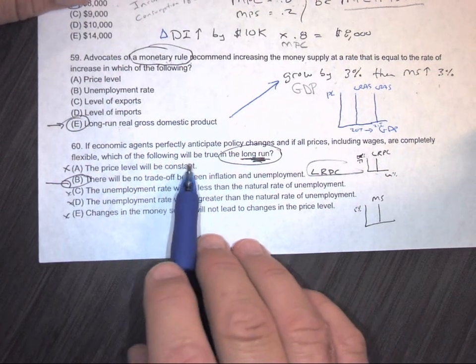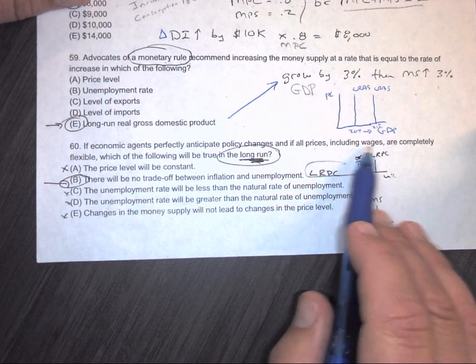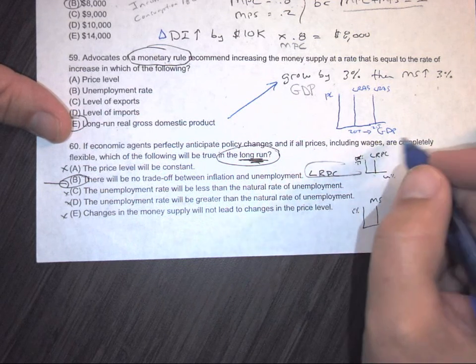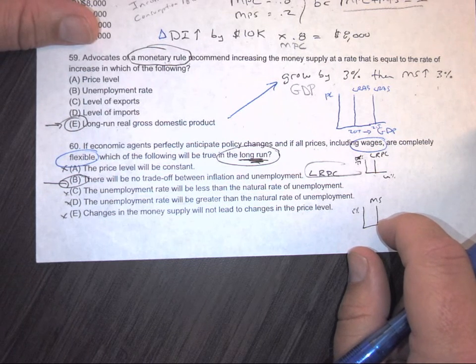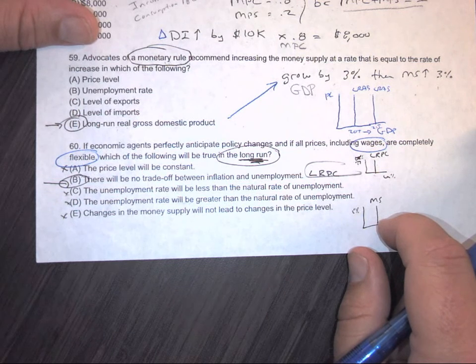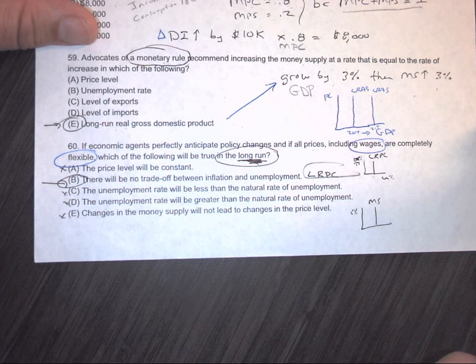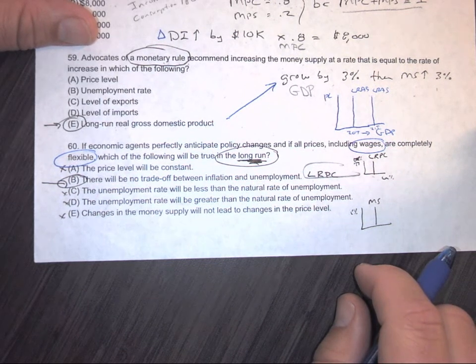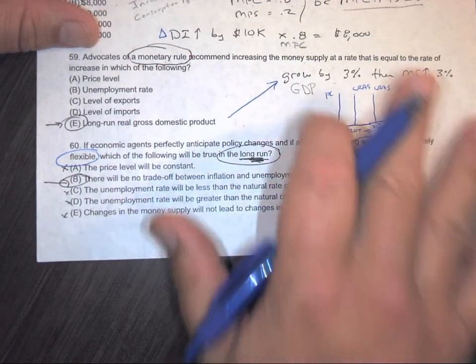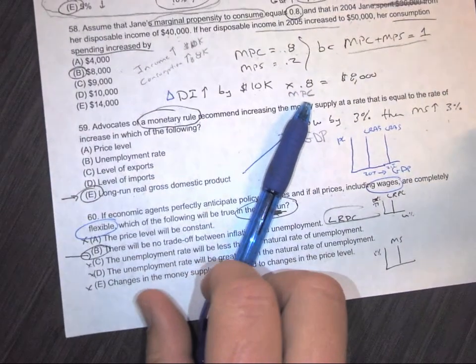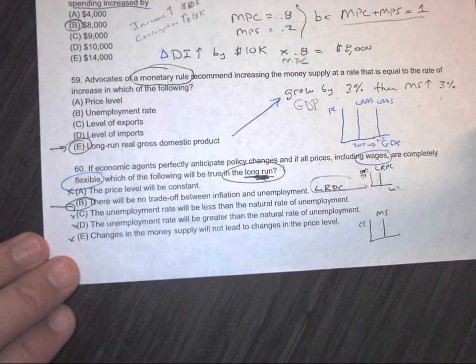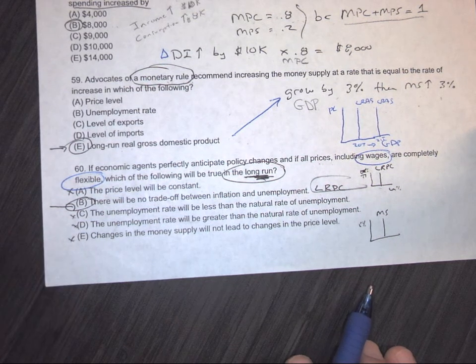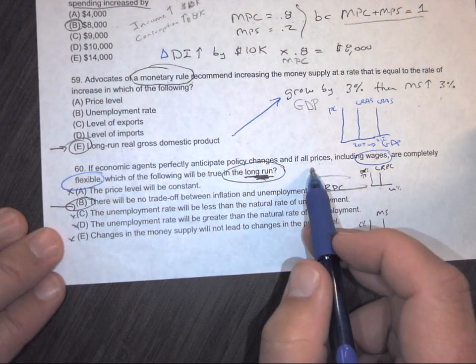Number 60. If economic agents perfectly anticipate policy changes, and if all prices, including wages, are completely flexible, which of the following would be true in the long run? Okay. This part right here. Wages being flexible. If it's a recession and you lost your job and you were making $12 an hour, you do need to be flexible on your wage if you want a job. Well, think about this. In a recession, employers have the upper hand, don't they? Because guess what? Don't people need a job? And if they walk in and give you a resume and they're like, hey, I am really good at this job. I need $15 an hour. And you go, well, here is the rest of the pile of resumes and they all want $8 an hour because that's what I'm offering. Do you need to be flexible? Yes.